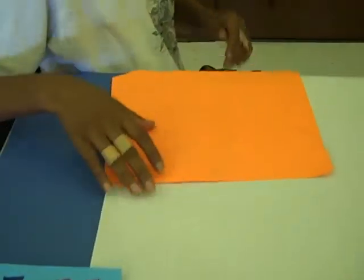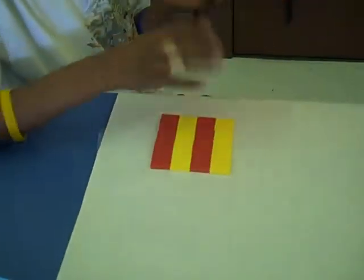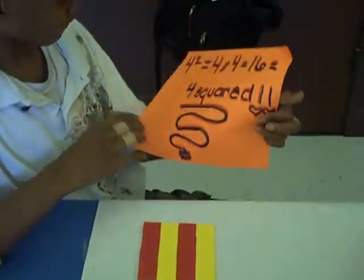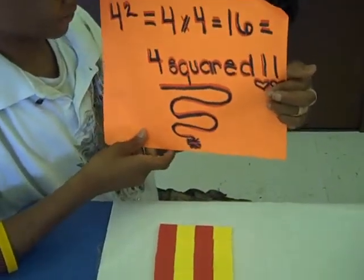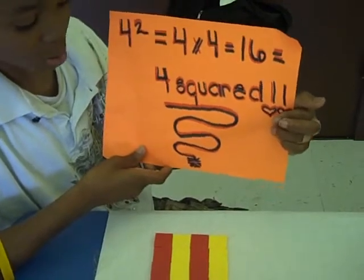Yeah, my turn. Sorry, I got a mismatch there. 4 to the second power equals 4 times 4 equals 16 equals 4 squared.